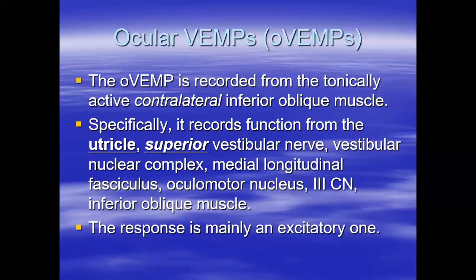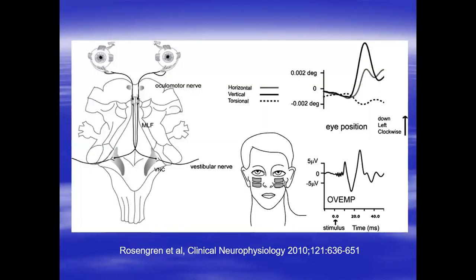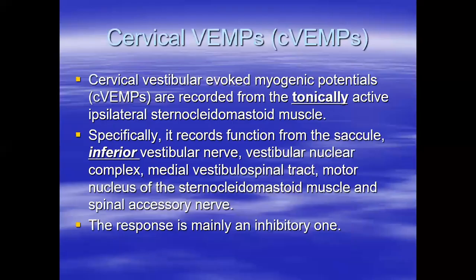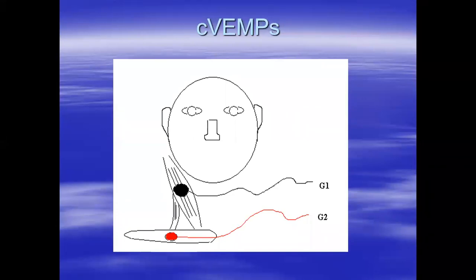For ocular VEMPs you need tonic contraction. Instead of asking the patient to flex their neck, you need to ask the patient to look upwards. If I may go back a few slides — with regards to contraction for C-VEMPs, in our laboratory we ask the patient to lie down on the bed in a horizontal position. It's best to lift the headrest slightly so the patient is not completely horizontal, making it easier to lift the head.